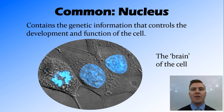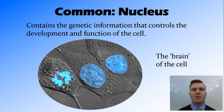Another thing common to both is the nucleus. This is the brain of the cell — this is where the genetic information is, and it controls all the functions that happen within the cell by sending messages from inside the nucleus, where the genetic information is, out into the cell, where the other organelles carry out those jobs based on the information from the nucleus.